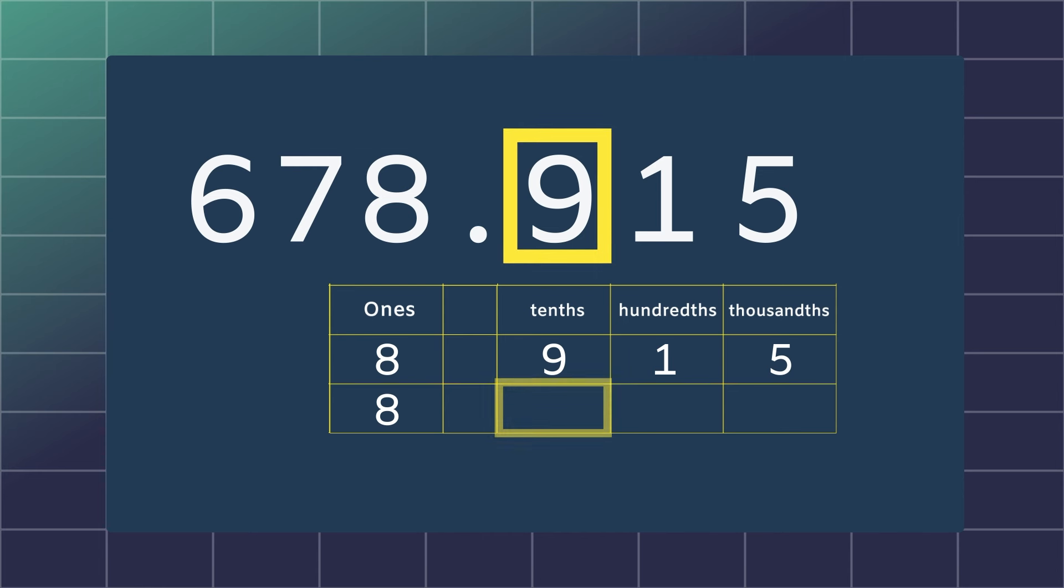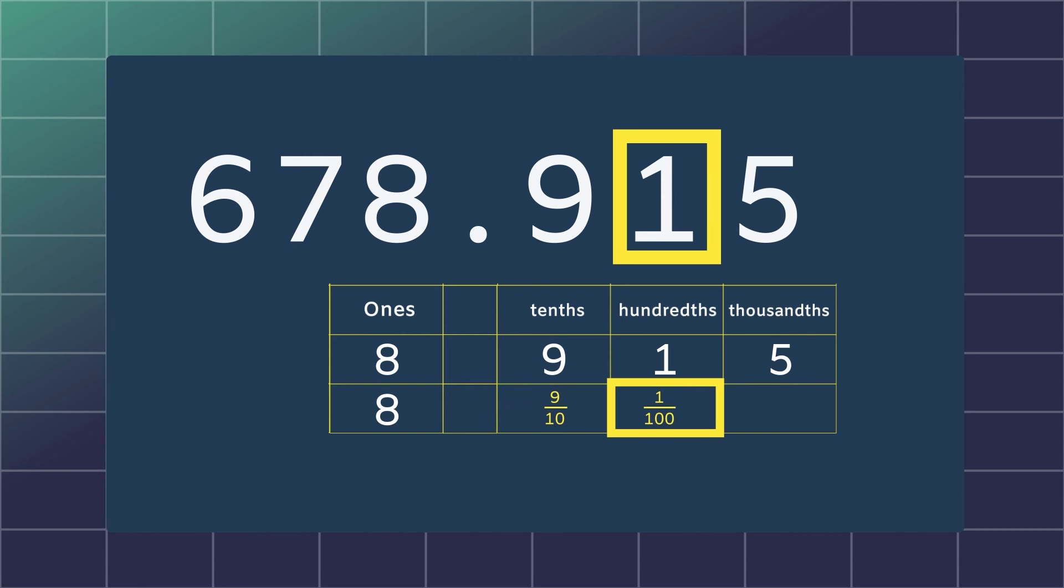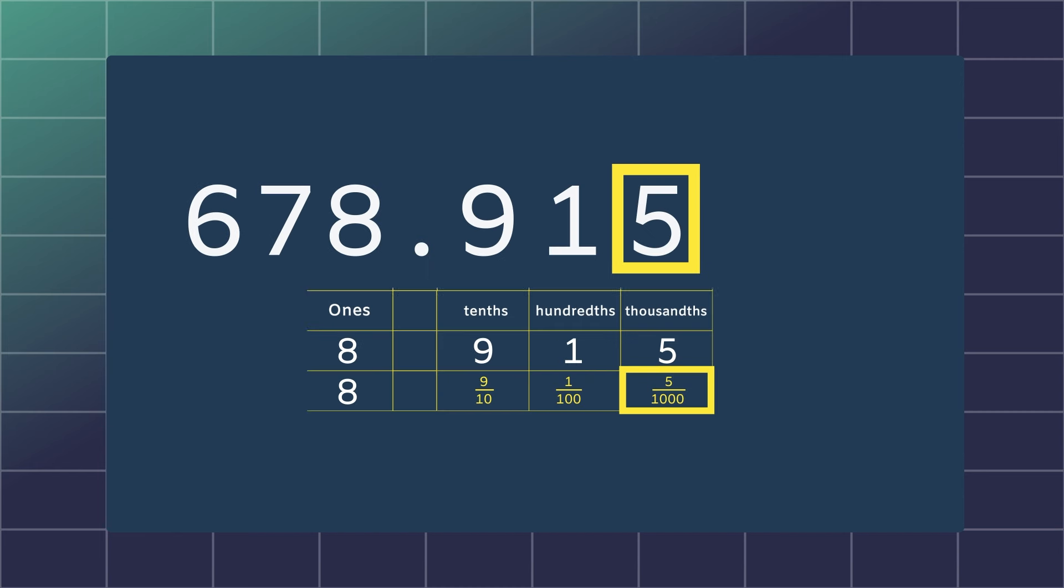The 9 represents nine tenths, the 1 represents one hundredths and the 5 represents five thousandths. So the place value of the number 5 represents five one thousandths. Great job for getting that.